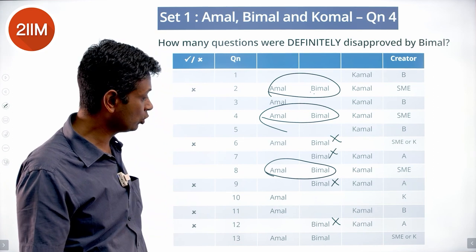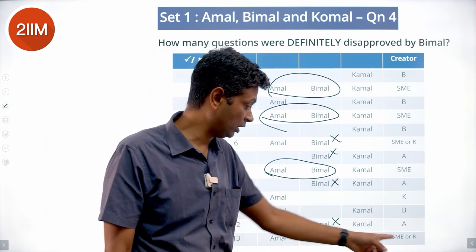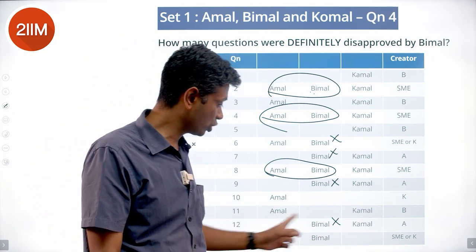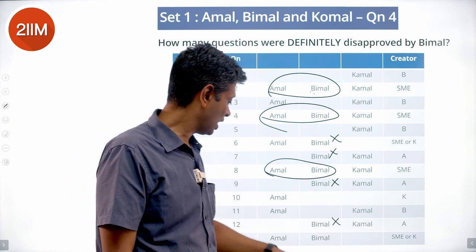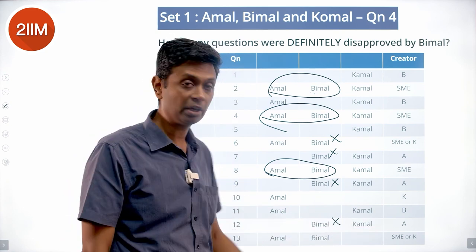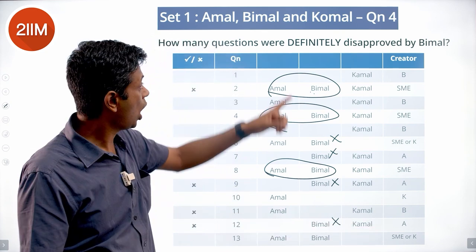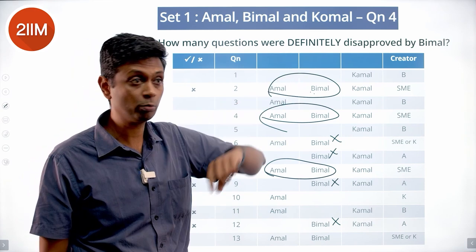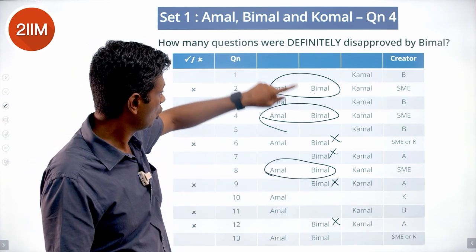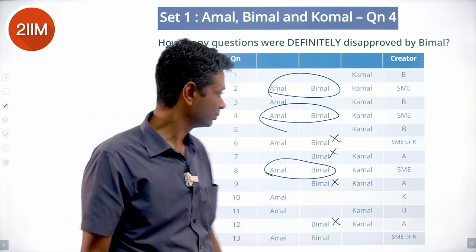For Q13, which was approved — if created by an SME, both should have approved it; if created by Komal, Amal rejected and Bimal approved. Either way, Bimal definitely approved Q13. So the count of questions definitely disapproved by Bimal is four: Q6, Q7, Q9, and Q11.